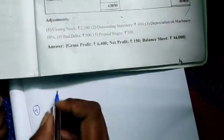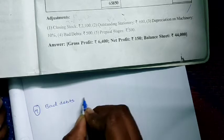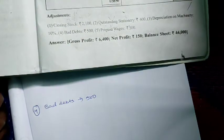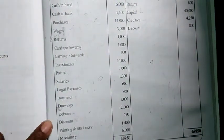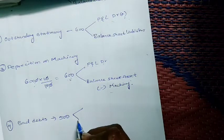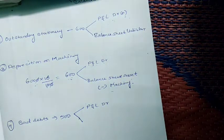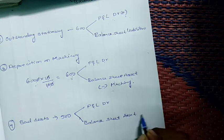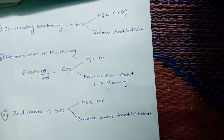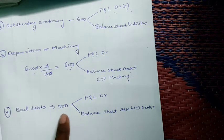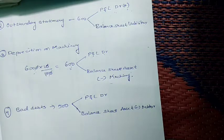The fourth adjustment is bad debts - 500. Bad debts adjustment is very important. Bad debts is given only in the adjustment, not in the trial balance. If bad debts is given only in adjustment, first take 500 in P&L account debit side. Next, in balance sheet asset side, deduct 500 from debtors.